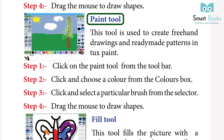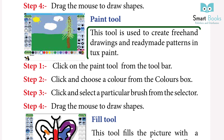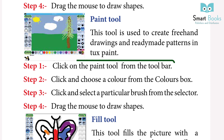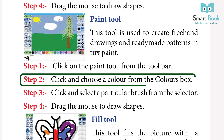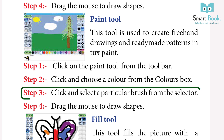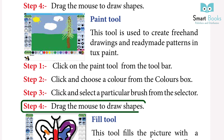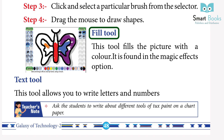Paint Tool: This tool is used to create freehand drawings and readymade patterns in Tux Paint. Step 1: Click on the Paint Tool from the toolbar. Step 2: Click and choose a color from the colors box. Step 3: Click and select a particular brush from the selector. Step 4: Drag the mouse to draw shapes.